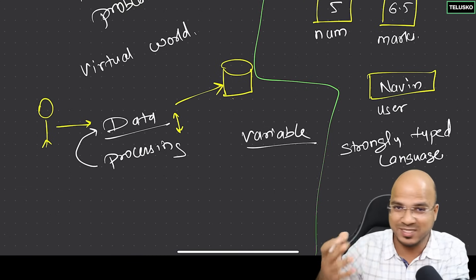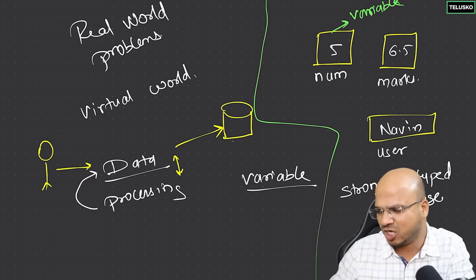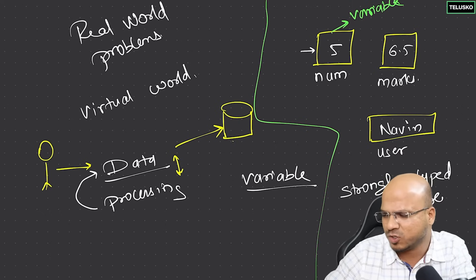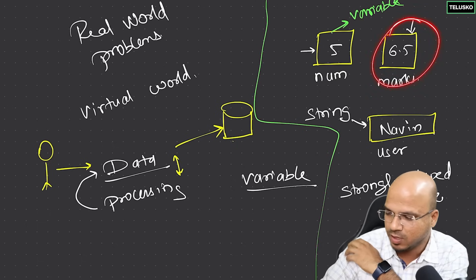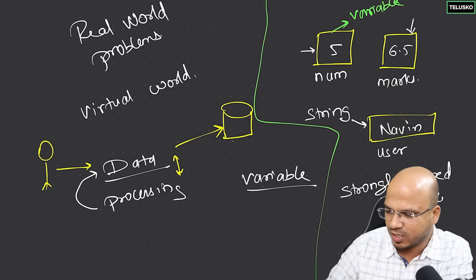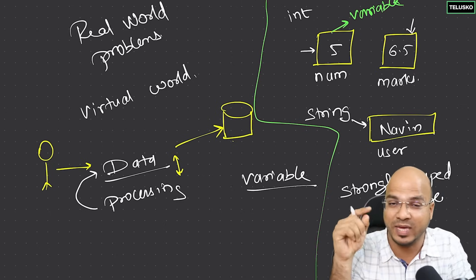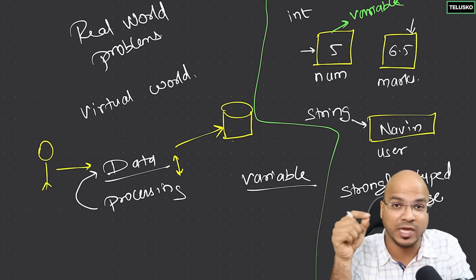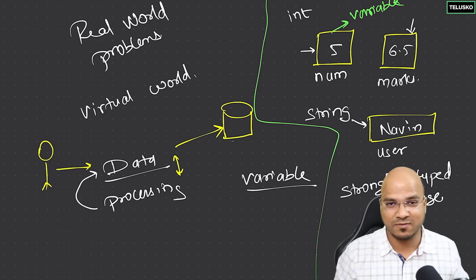Java is a strongly typed language, meaning when you create a variable, you must tell Java what kind of box you want. Text is called a String in Java. For numbers, we have categories: whole numbers (including negatives) are stored as int, which stands for integer. So you can store -5 or +5 as int, but 6.5 is a real number and cannot be stored in int.